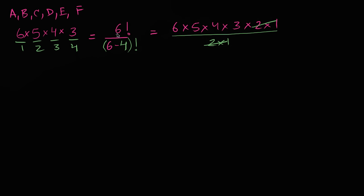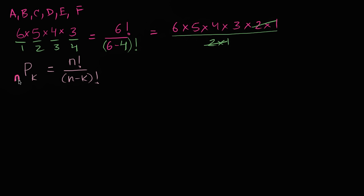This is a review of the permutations formula. If we're taking n things and want to figure out how many permutations there are putting them into k spots, it's going to be n factorial over n minus k factorial. That's exactly what we did here, where six is n and four is k. Let me color code the whole thing so we can see the parallel.